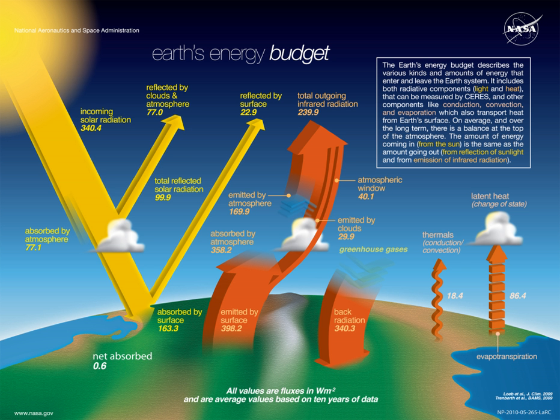To quantify Earth's heat budget or heat balance, let the insolation received at the top of the atmosphere be 100 units, which equals about 1,360 watts per square meter facing the Sun, as shown in the accompanying illustration. Called the albedo of Earth, around 35 units are reflected back to space: 27 from the top of clouds, 2 from snow and ice-covered areas, and 6 by other parts of the atmosphere. The 65 remaining units are absorbed: 14 within the atmosphere and 51 by the Earth's surface.